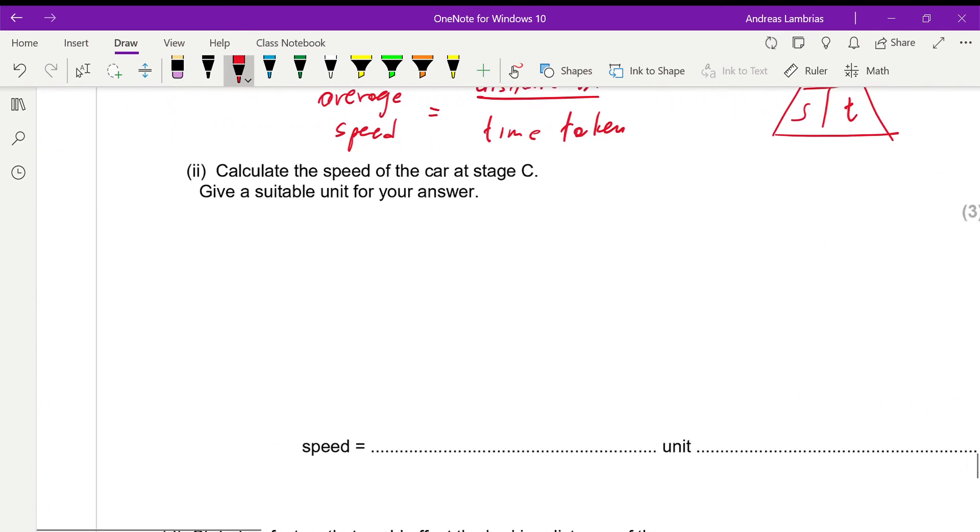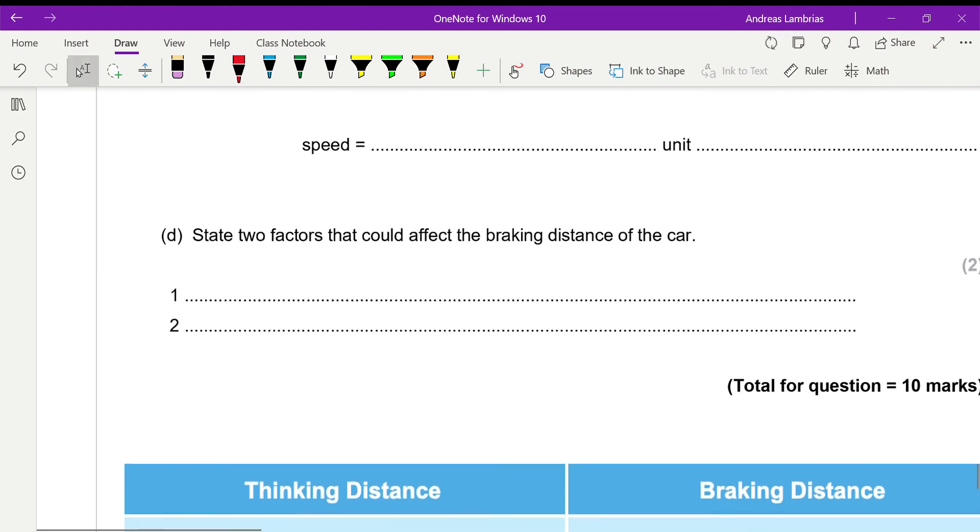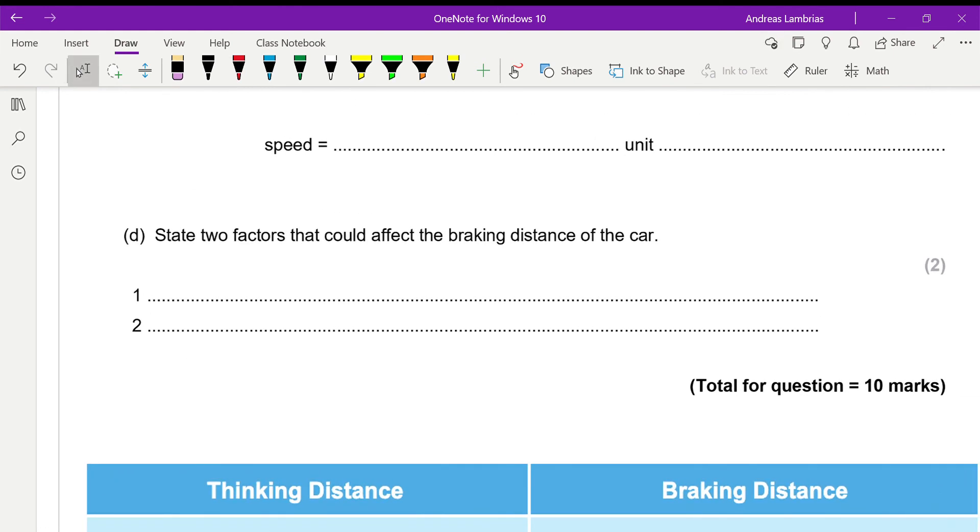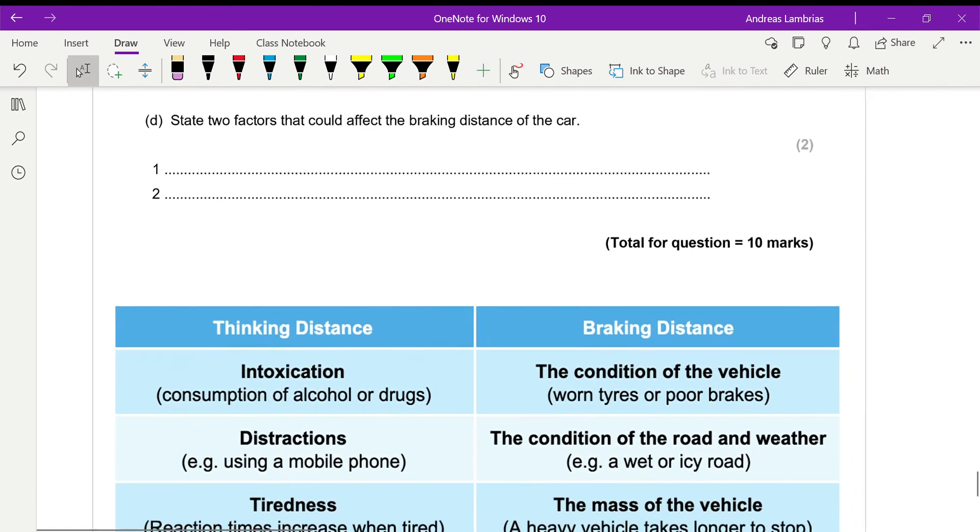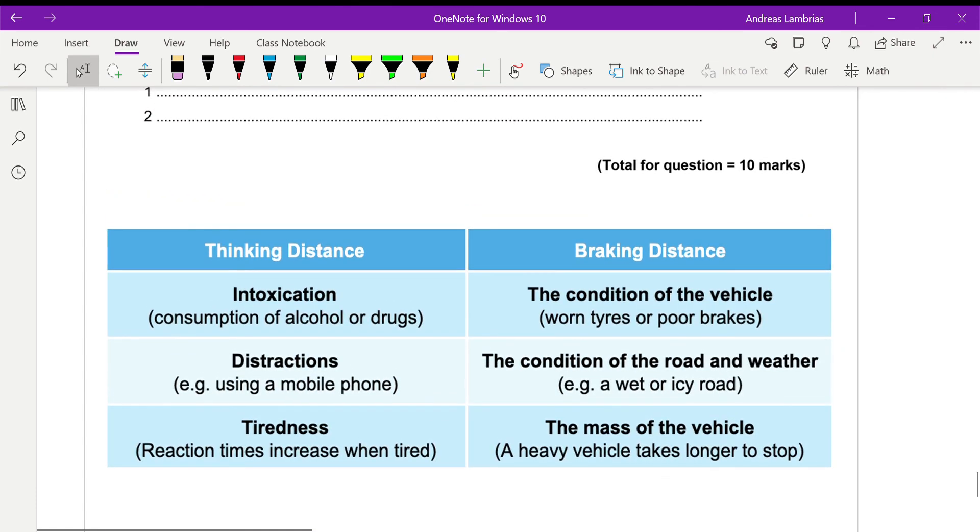The last one is about stating two factors that could affect the braking distance of the car. Just as a reminder, the stopping distance can be split into the thinking distance, the distance that you cover until you react until you hit the brake, and then the braking distance which is the distance you cover after you hit the brake.